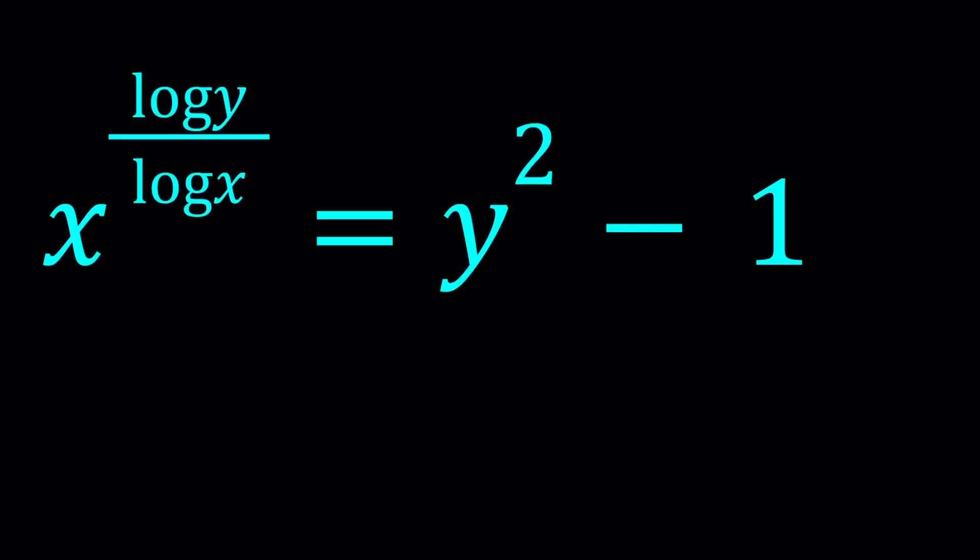We have x to the power log y over log x equals y squared minus 1. And we're going to be solving for x and y values. I'm also going to show you a graph at the end, which kind of explains what is going on.